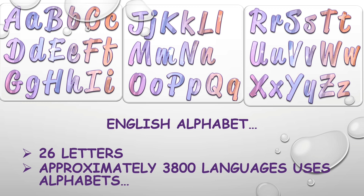The alphabet is a sequence of letters arranged in a specific order that are used for reading and writing a language. As everyone knows, it consists of 26 letters, each having an uppercase and a lowercase form — uppercase means the capital form and lowercase means the small letters. Approximately there are almost 3,800 languages on earth that use an alphabet. Let's see some examples of languages that use an alphabet.